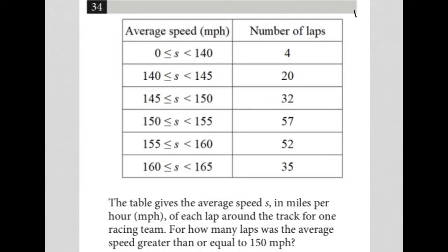This question is a diagram question. We have this table provided here. The first column is average speed, and we have some ranges of speed provided in each of these rows, and then number of laps.